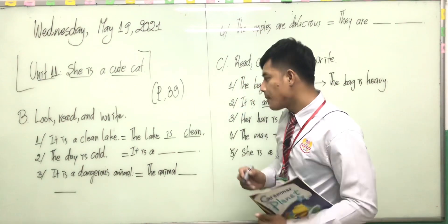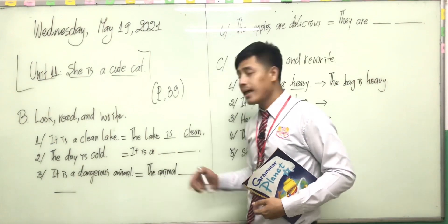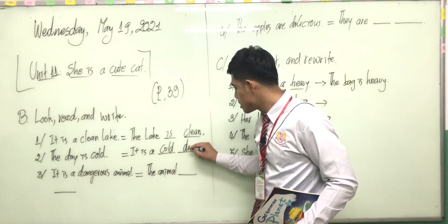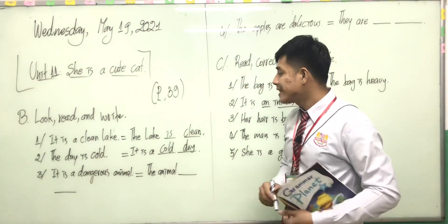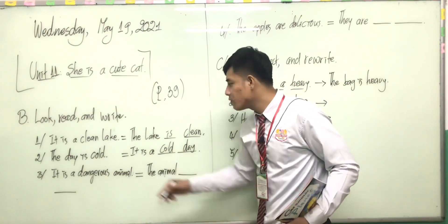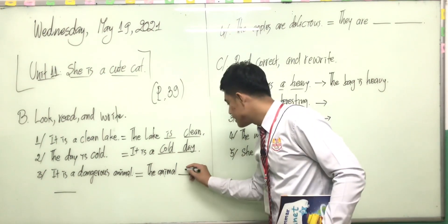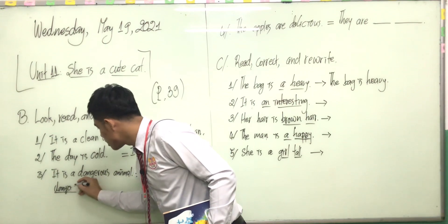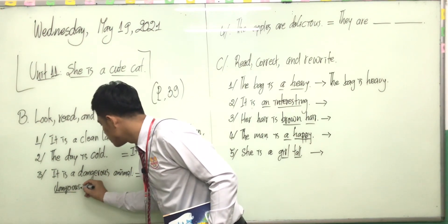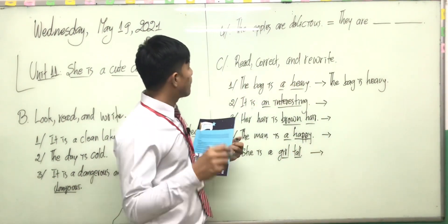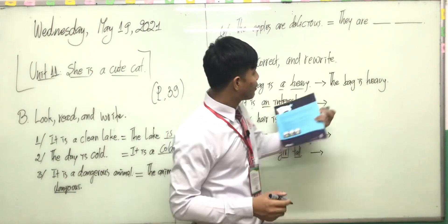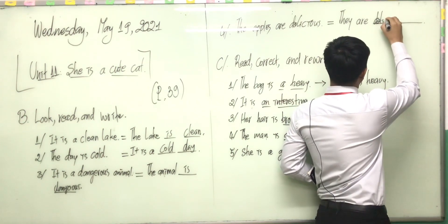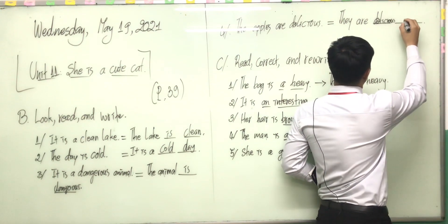Number two: 'The day is cold' — 'It is a cold day.' Number three: 'It is a dangerous animal' — 'The animal is dangerous.' Number four: 'The apples are delicious' — so what can you write here? 'They are delicious apples.' Delicious apples.